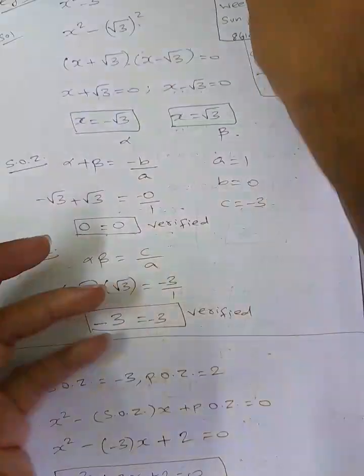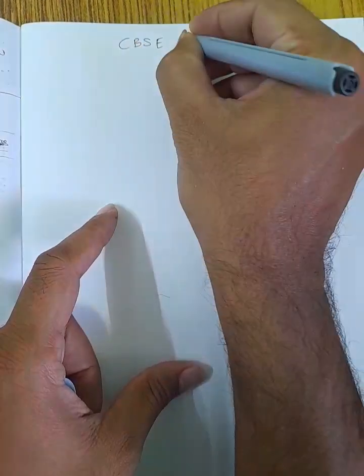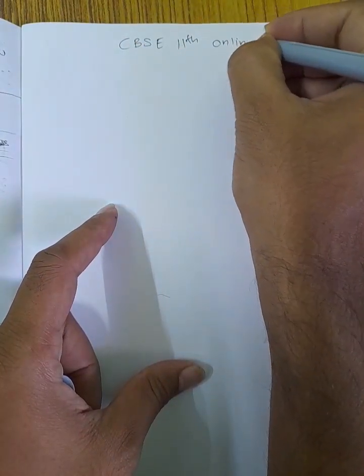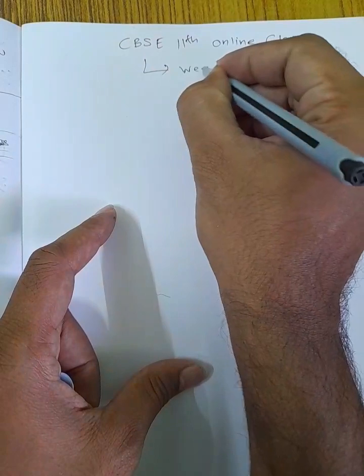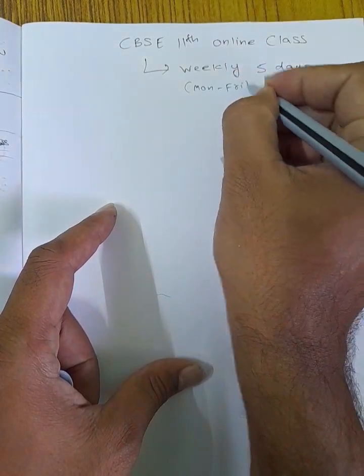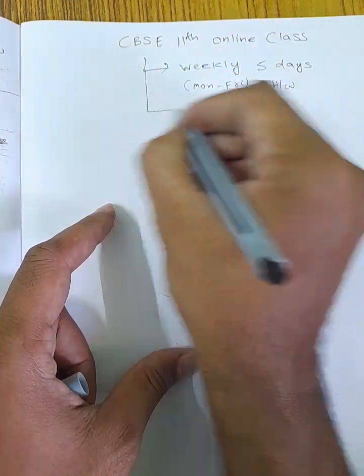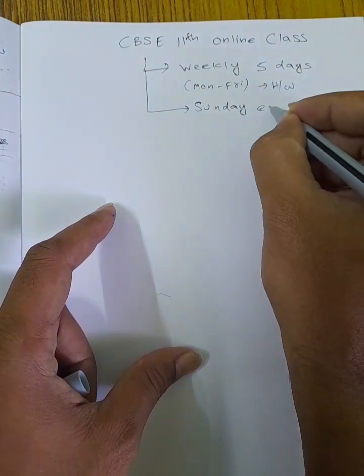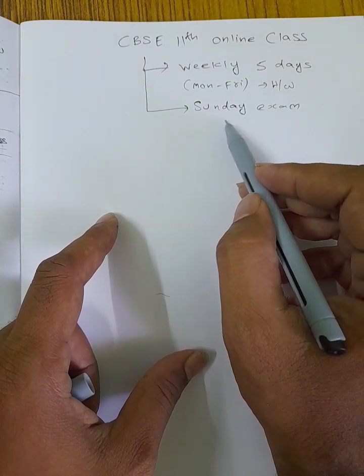For CBC 11th, there will be online classes. Classes are going to begin in June. These are weekly 5-day classes, Monday to Friday, with daily homework questions. Every Sunday there will be an exam — one exam covering sections 1.1 and 1.2.